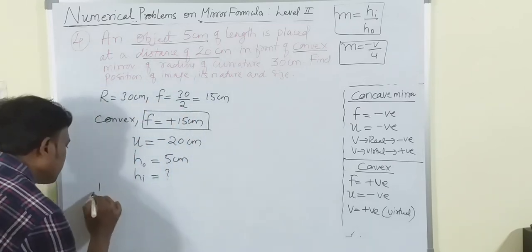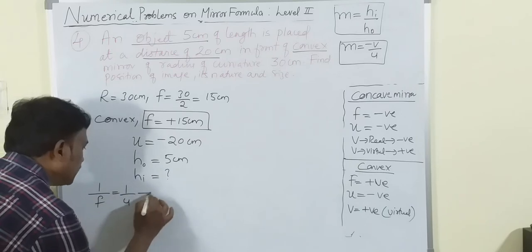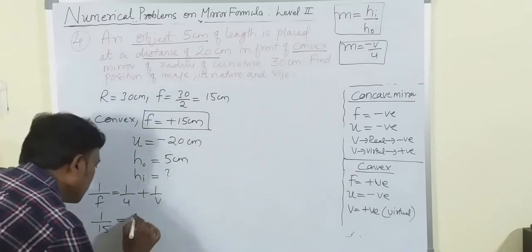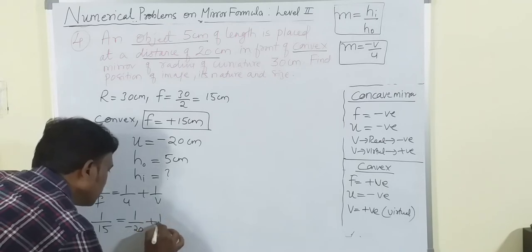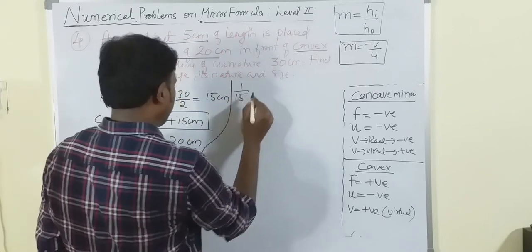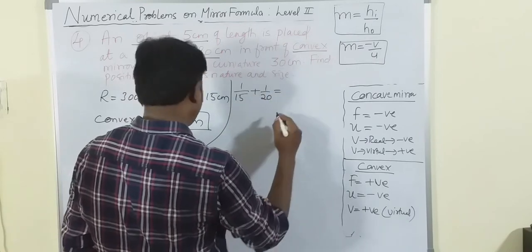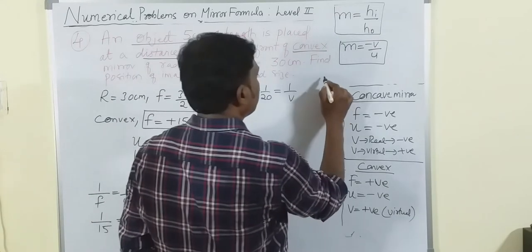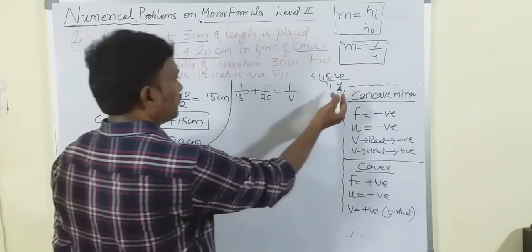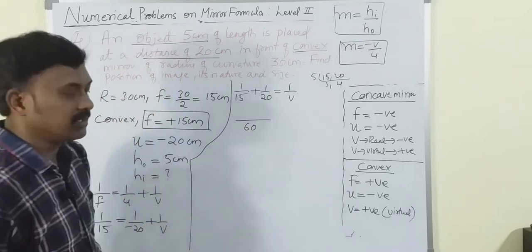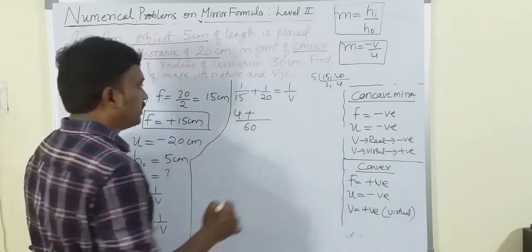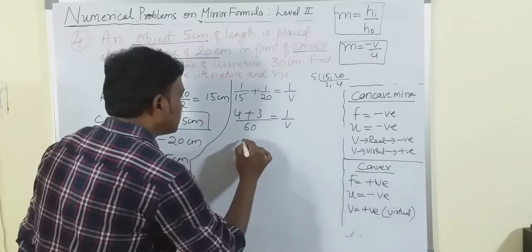Substituting in the mirror formula: 1/f = 1/u + 1/v. So 1/15 = 1/(-20) + 1/v. Rearranging: 1/15 + 1/20 = 1/v. LCM of 15 and 20 is 60. So (4 + 3)/60 = 1/v, giving 7/60 = 1/v.